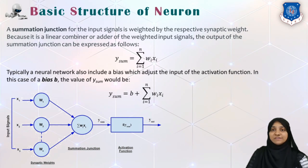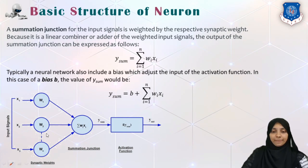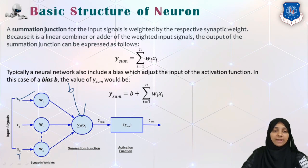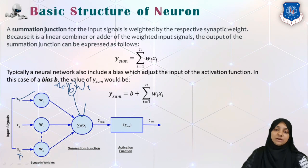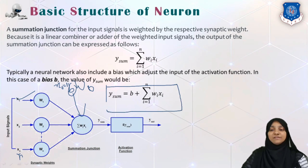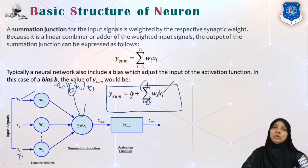In some cases there is a special kind of input to the summation junction called bias B. Inputs are always ranging from 1 to N, but in special cases there is a bias, which can also be written as X0, which is always equal to 1, with weight W0. So in this case Ysum is written as B plus the summation from 1 to N of Wi times Xi.